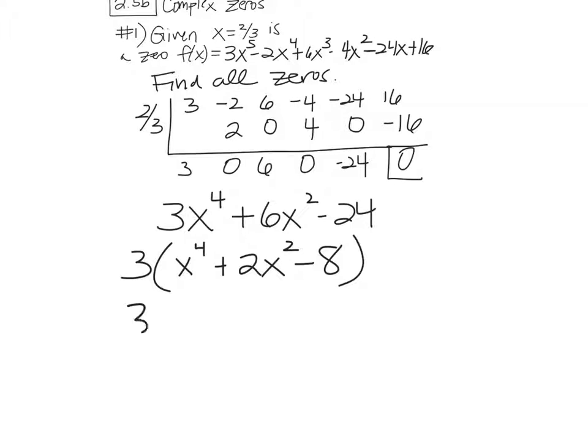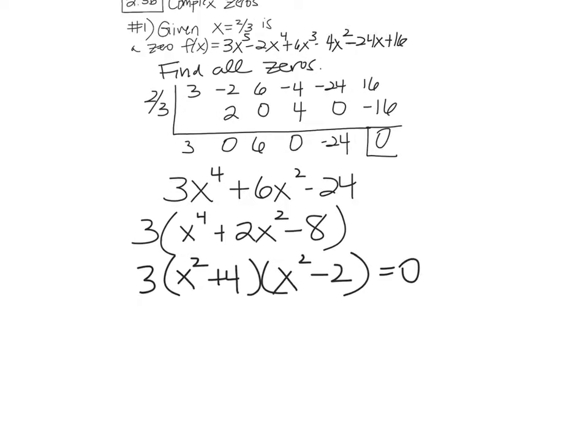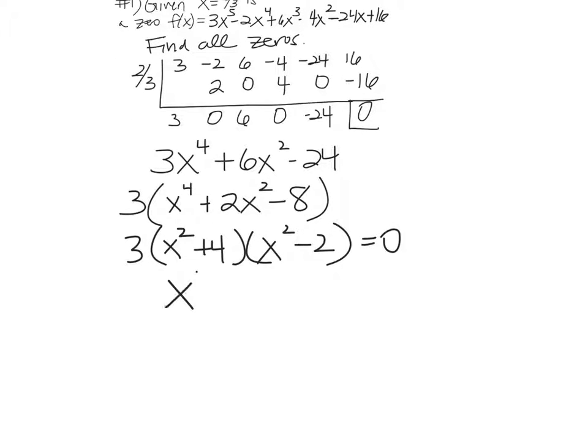Factor 3 out to the front, and then you're left with x^4 + 2x^2 - 8. Okay, and let's go ahead and factor it some more. So I have x squared and x squared. And what times what's negative 8 adds up to positive 2? Positive 4 and negative 2. Let's set that equal to 0 and solve since we're trying to find the zeros.